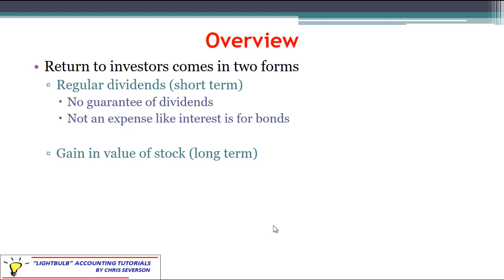Now as an investor, you invest your hard-earned money and you hope to get a return at some point. There are two main returns that you can expect depending on the type of company you're dealing with. The first one might be a regular dividend — these are more short-term returns. Now an important thing to note: this is not like interest. If you invest in a bond, you expect interest back at certain points in time. Dividends are not expenses; they're not the same as interest. They're similar in concept, but they come from two different sides of the equation. There is no guarantee that you will ever receive a dividend. There is no contractual obligation that you will receive a dividend.